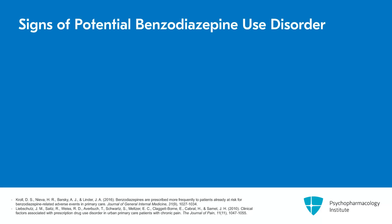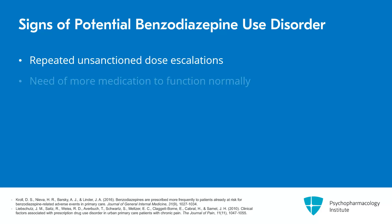When prescribing patients benzodiazepines, some possible signs of a developing use disorder include repeated unsanctioned dose escalations. If this happens once and you discuss your concerns with the patient, that does not mean it's a use disorder. However, if there is a pattern of frequent dose escalations where someone perceives they need more and more of the medication to function normally — especially beyond amounts you feel comfortable prescribing — that could be a sign of a developing use disorder.